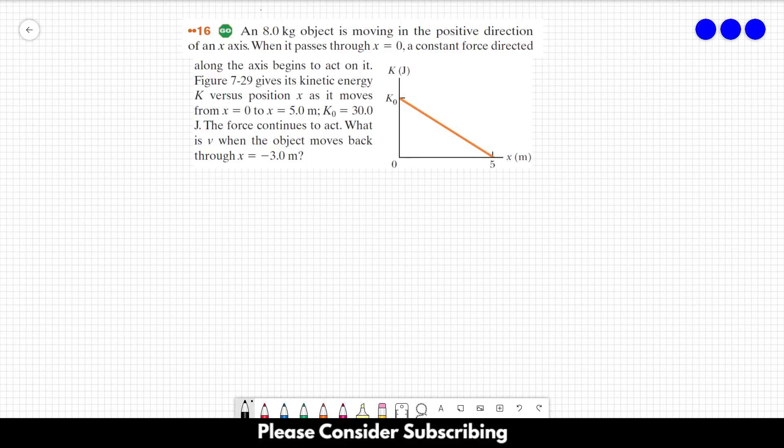Number 16. An 8 kilogram object is moving in the positive direction of an x-axis. When it passes through x equal to 0, a constant force directed along the axis begins to act on it.